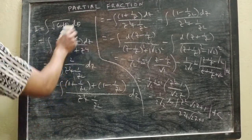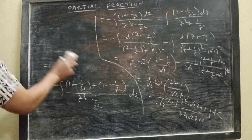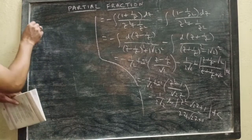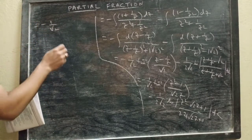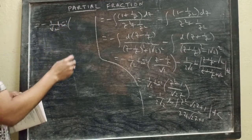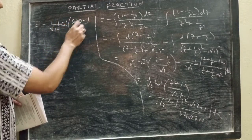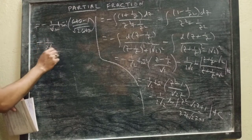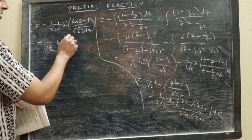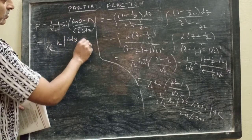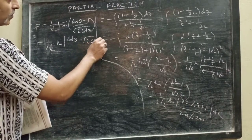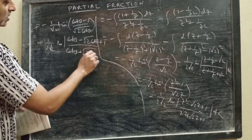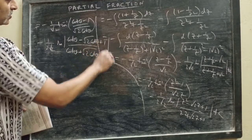Now I have to substitute z. z is √(cot θ), so z² is cot θ. Therefore: −(1/√2) tan⁻¹((cot θ − 1)/(√2 · √(cot θ))) minus (1/(2√2)) ln|(cot θ − √2·√(cot θ) + 1)/(cot θ + √2·√(cot θ) + 1)| + C.